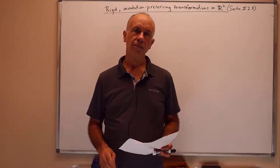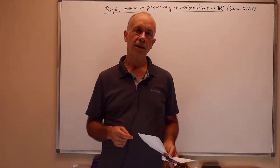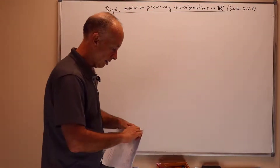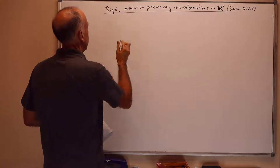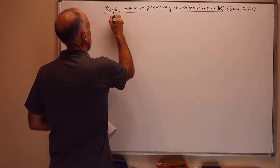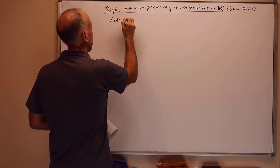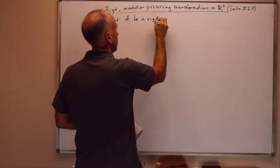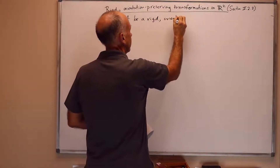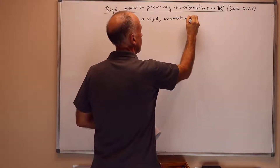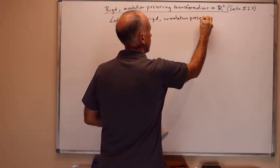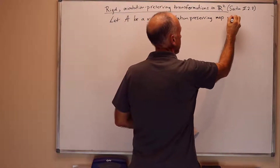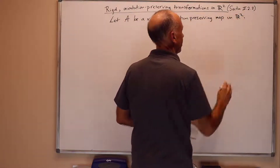In this presentation I'll talk about rigid orientation-preserving transformations of R2. We're going to assume throughout that we've got a rigid orientation-preserving map A. So let A be a rigid orientation-preserving transformation or map on R2.